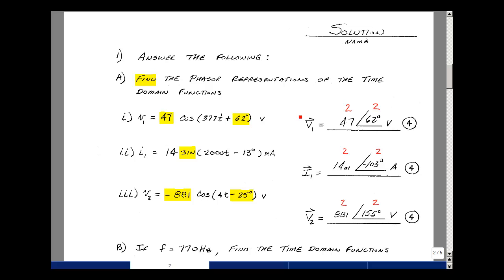Problem number one had several parts. The first one was to find the phasor representations of the following time domain functions. Given that V1 is 47 times the cosine of 377t plus 62 degrees, putting that into phasor form in polar, the magnitude is 47 and the angle is 62. That was worth four points, and I gave partial credit for each of the two answers.